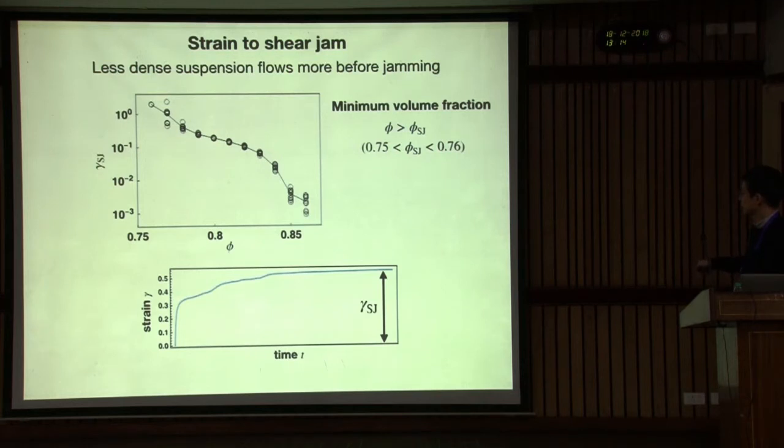I plot volume fraction dependence. What I observed is, actually, I ran simulation at 75% but 10 simulations, no simulation reached shear jammed state in strain 5. At 76%, one of 10 is shear jammed. And above 77% all states are shear jammed. You can notice this is of course monotonic decrease of shear strain. So flowing strain becomes smaller and smaller.